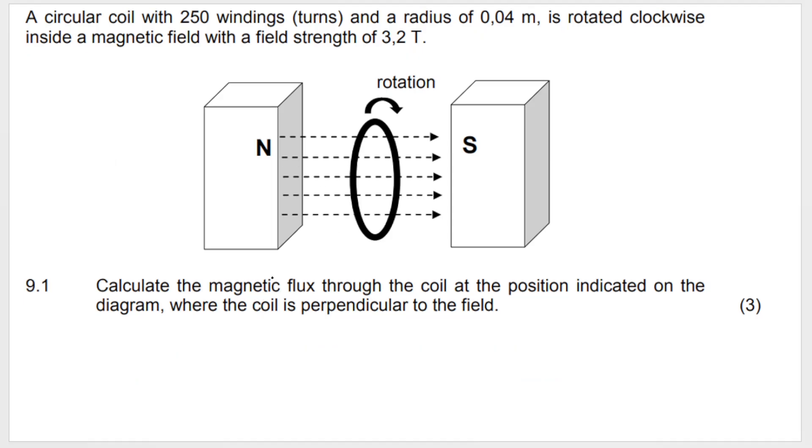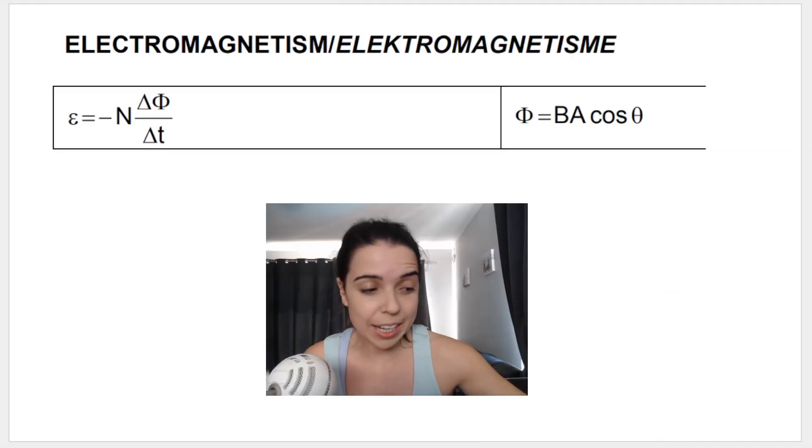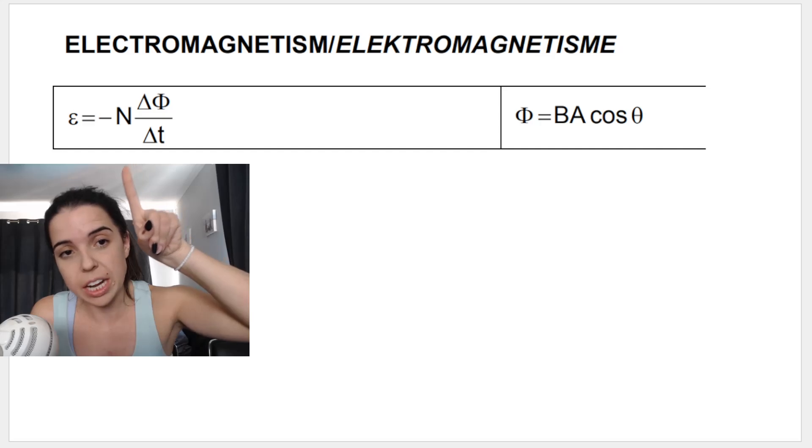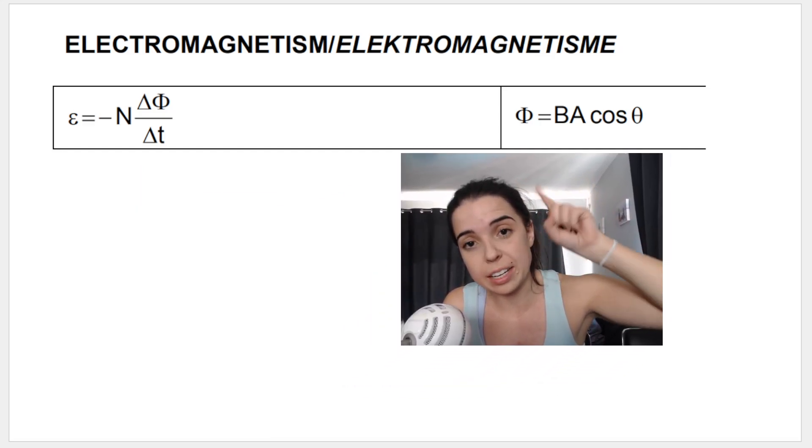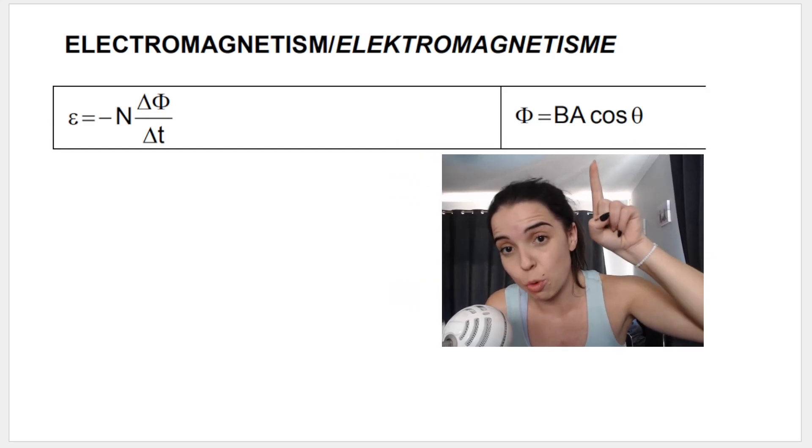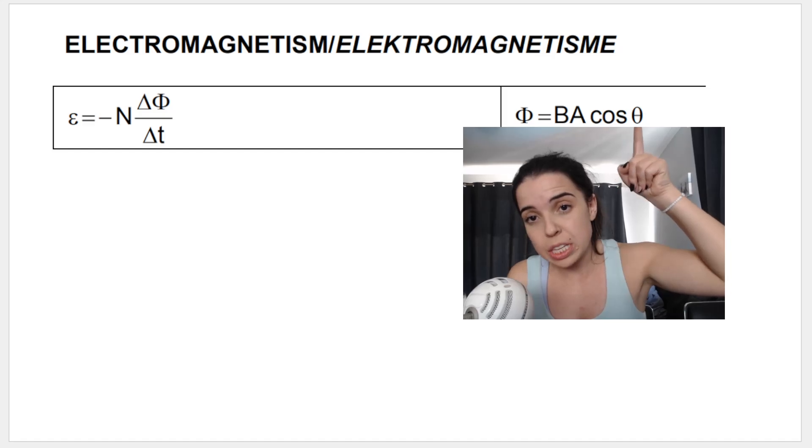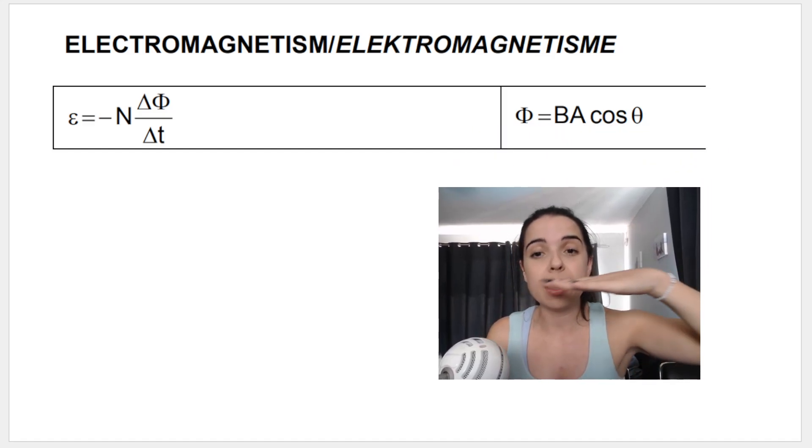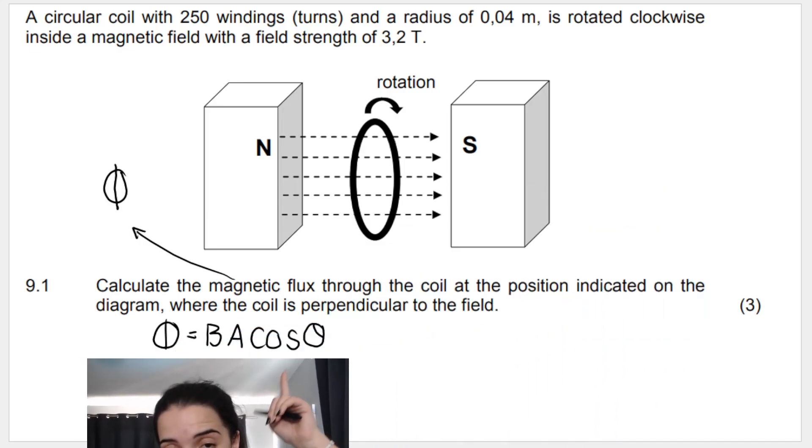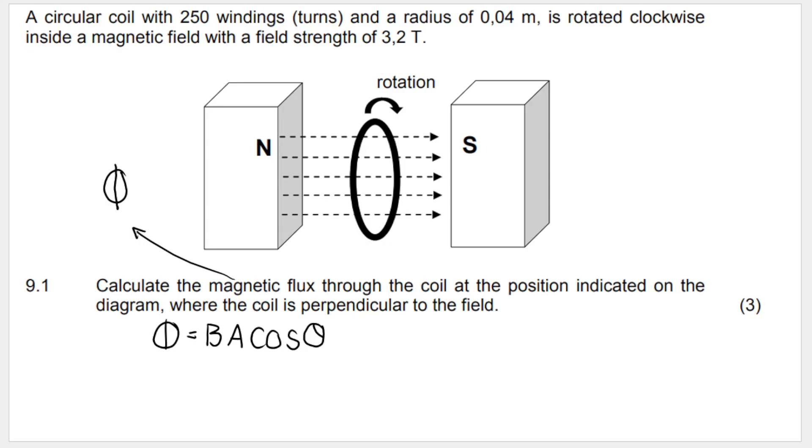Starting with 9.1: calculate the magnetic flux through the coil at the position indicated on the diagram where the coil is perpendicular to the field. When they want me to calculate magnetic flux, that is this symbol. Looking at the two formulas given for electromagnetism, we've got one where we calculate EMF, and one where we calculate magnetic flux or magnetic flux linkage. We need to write our blank formula then substitute.